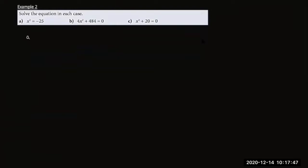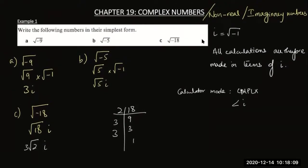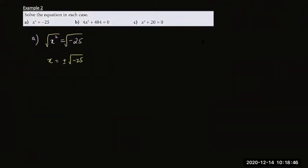Let's look at the first example: x squared equals minus 25. When we take the root of both sides, there are two possibilities — one with a plus and one with a minus. So x equals plus or minus root of minus 25, which can be written as plus or minus 5i. A quadratic equation will have two roots.